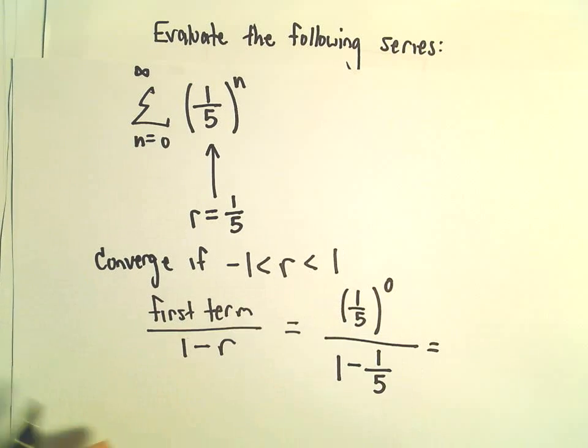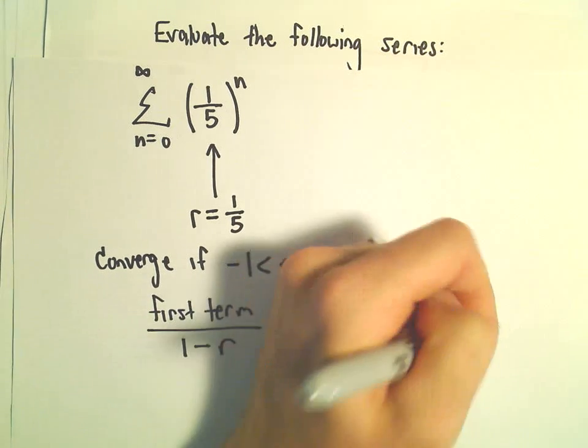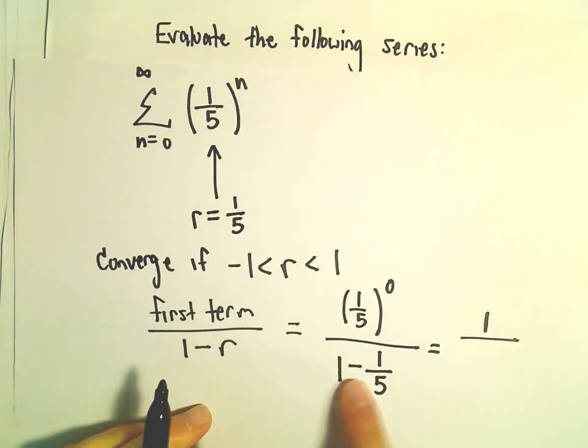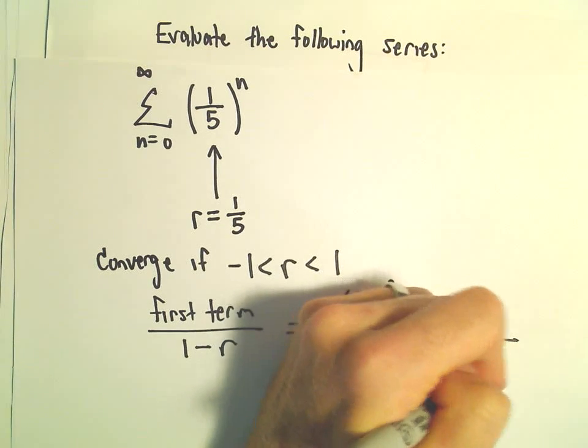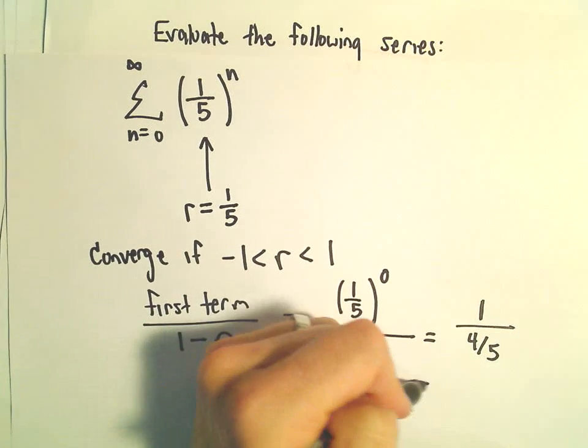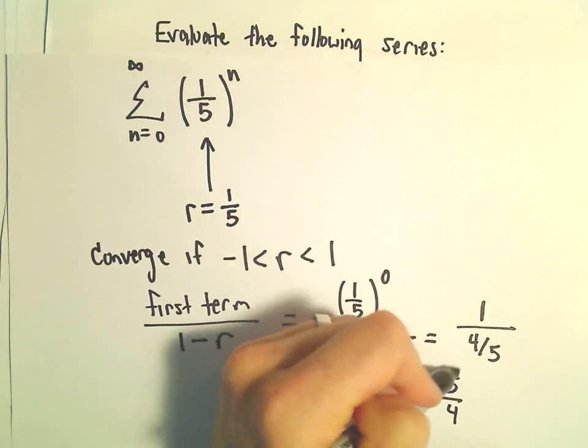Well, 1 fifth to the 0 is just 1. 1 minus a fifth is going to be 4 fifths. And 1 over 4 fifths gives us 5 over 4.